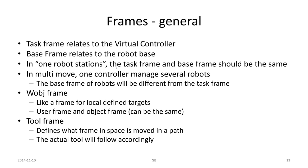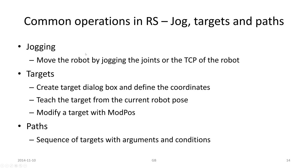Then we have the work object frames and tool frames, and we can even have more frames. If we have a robot or a tool, we can do jogging — that means moving the robot by jogging the joints or the TCP of the robot. In the same way, we can jog motions of a tool or a positioner, which might have one, two or more axes to move.